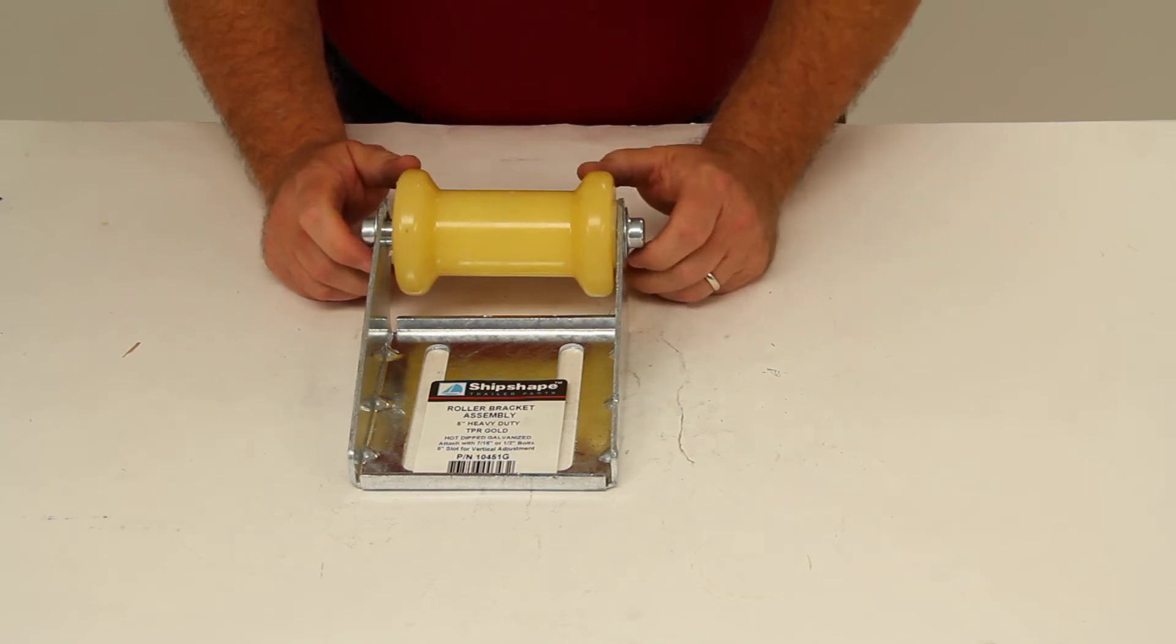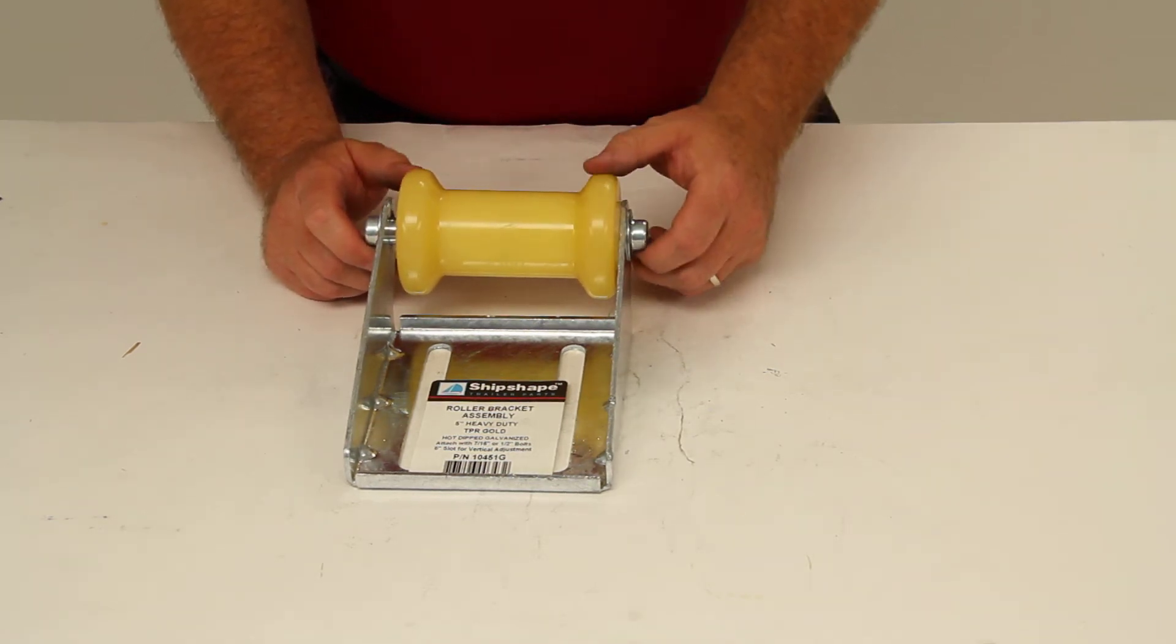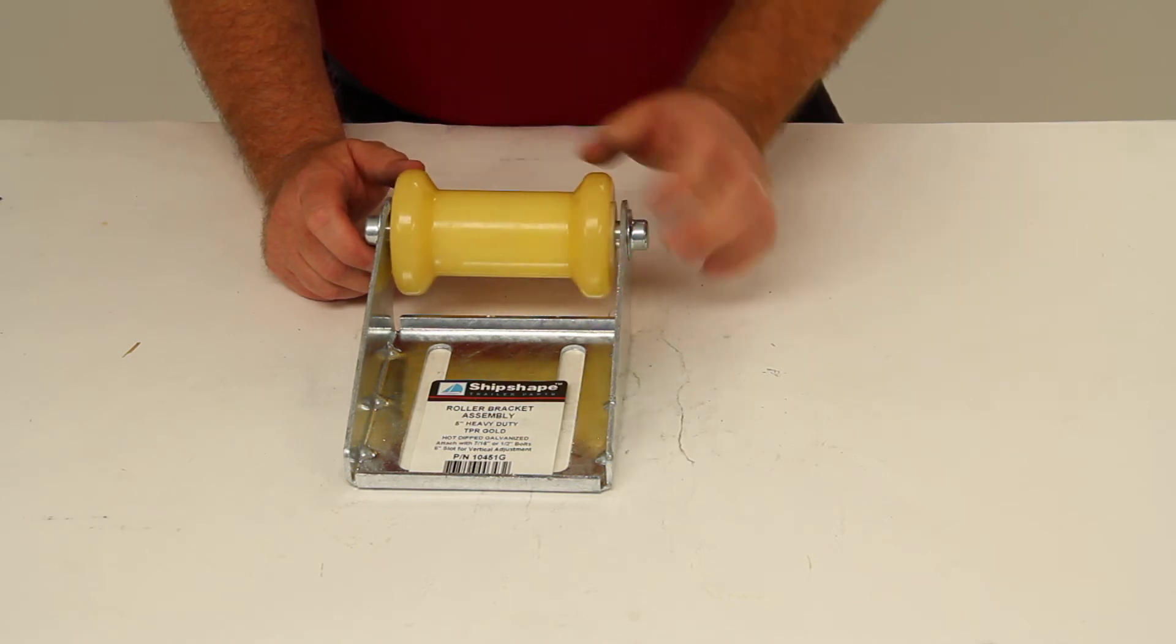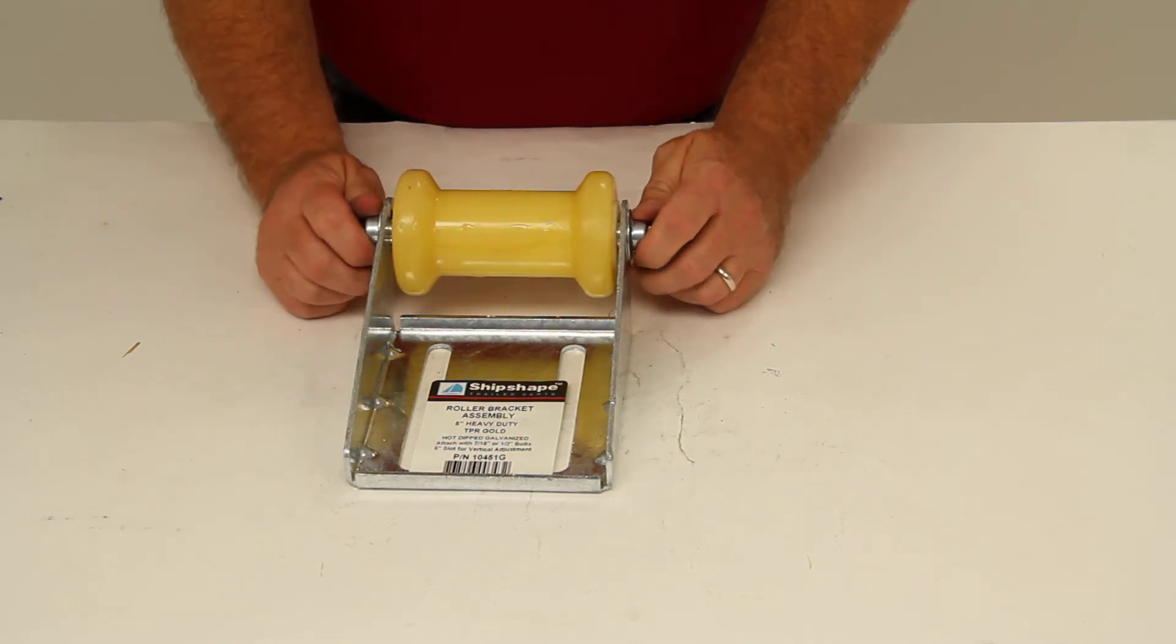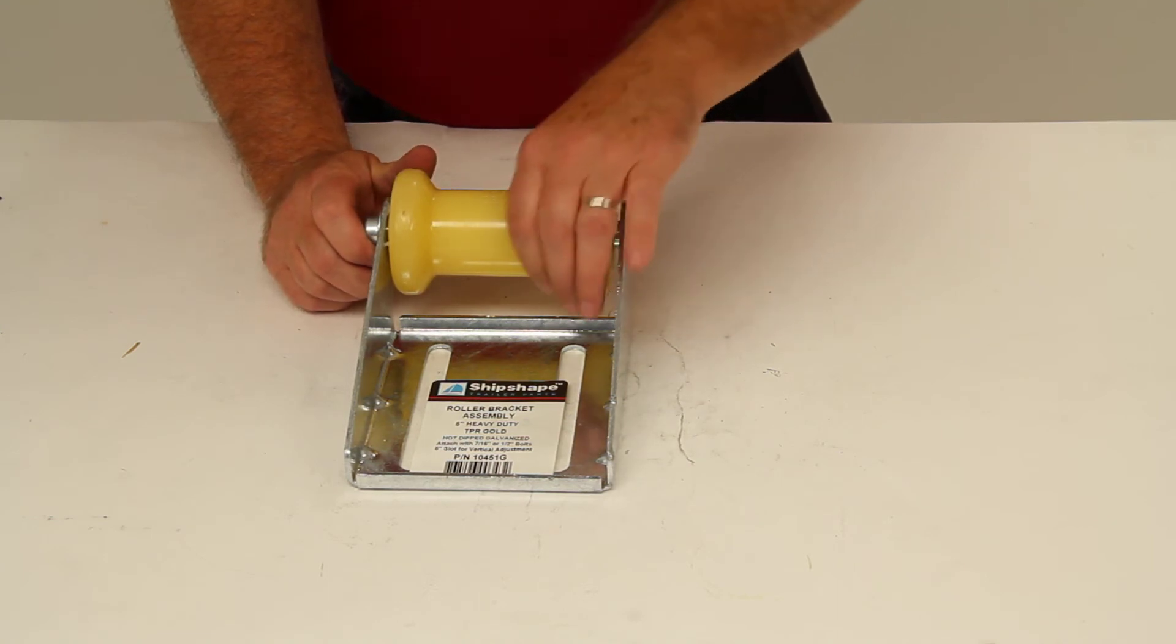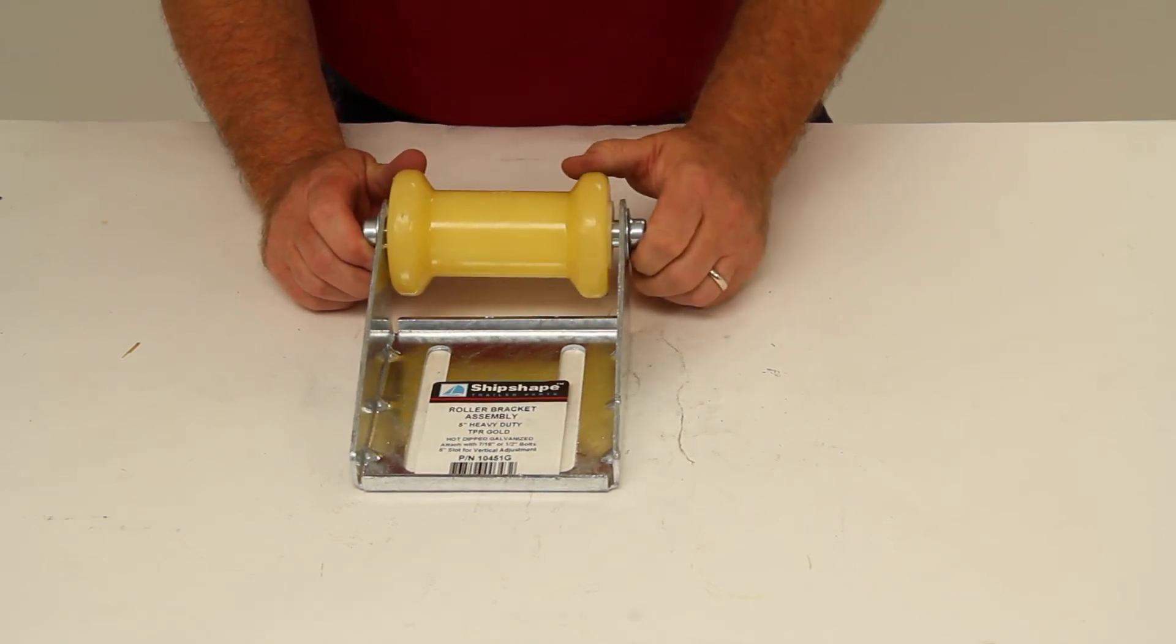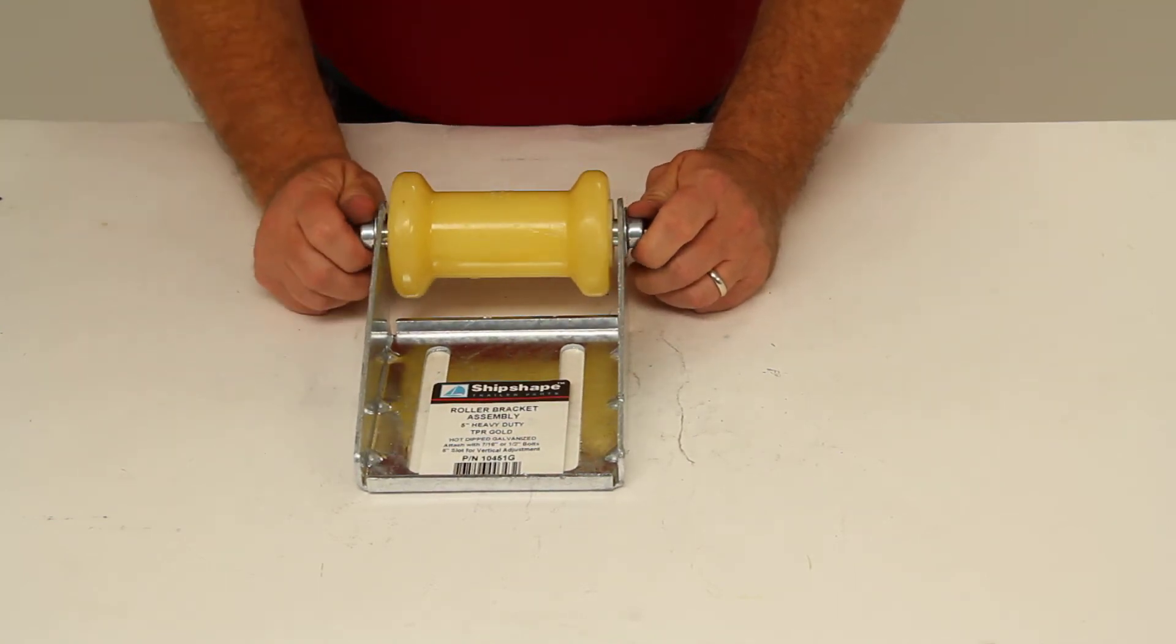The roller is a yellow TPR roller which is thermoplasticized rubber which delivers superior long-lasting performance. The TPR material is non-marking and it's stronger than rubber and softer than polyurethane. This part is made in the USA.